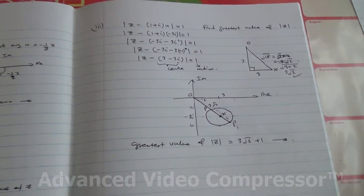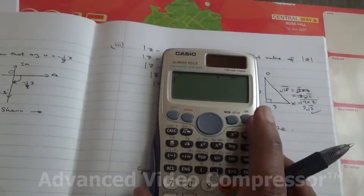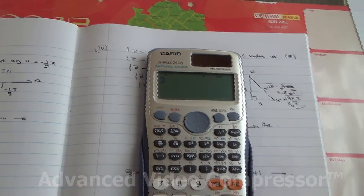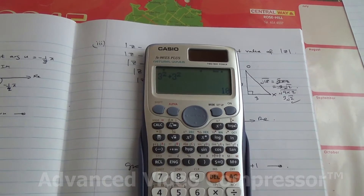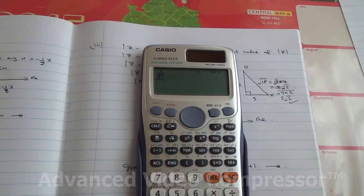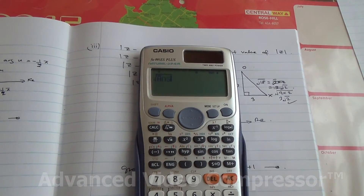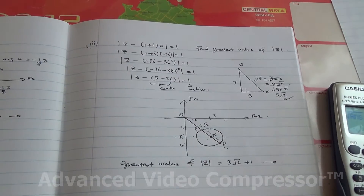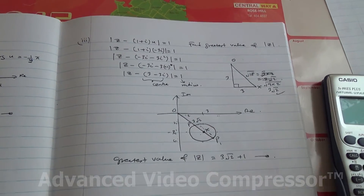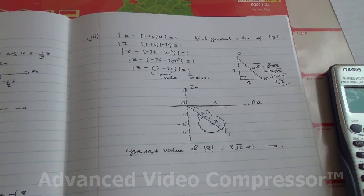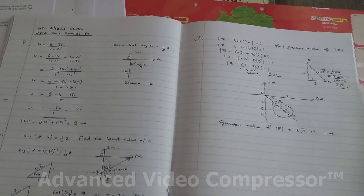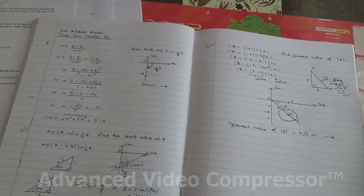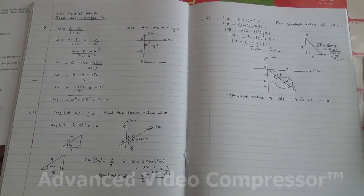Let me just check to make sure everything is fine. Root of 18 gives us 3 root of 2, and adding the radius of 1 gives 3 root 2 plus 1. This question is taken from June 2011, Advanced Level Maths A-level HSC P3.